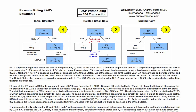In this example, the acquiring entity DX had earnings and profits of 90, and the target entity FY had earnings and profits of 110. Thus, the transaction was treated as a dividend of 90 out of DX to FX, and then as a dividend of 110 out of FY to FX.